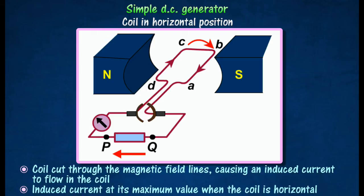The direction of the induced current is from D to C and from B to A. This causes the current to flow through the external circuit from Q to P.